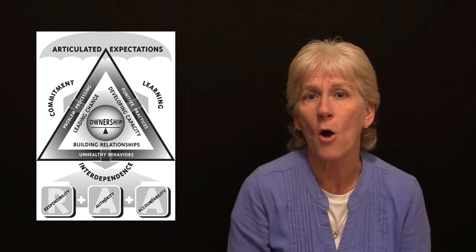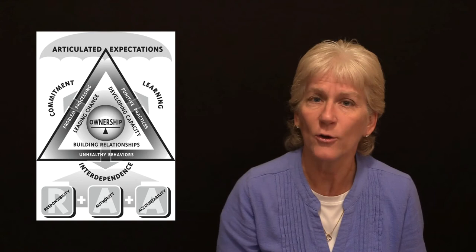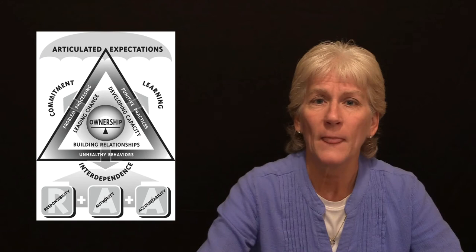Then around ownership is the empowerment triangle. The empowerment triangle has three sides. The three sides consist of building relationships, developing capacity, and leading change. Those are the three sides of the triangle that you need to tend to all the time. And ownership sits in the middle.